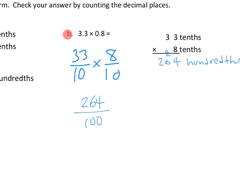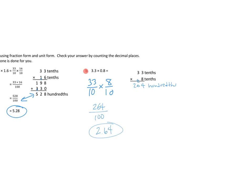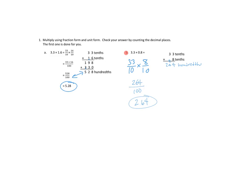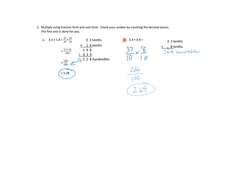What is 264 hundredths as a decimal? We bundle up 200 hundredths to make 2 wholes. We bundle up 60 hundredths to make 6 tenths. That leaves us with 4 hundredths left over — or 2.64. We get that whether we expressed 264 hundredths in fraction form or in unit form. Our answer is the same: 2.64.